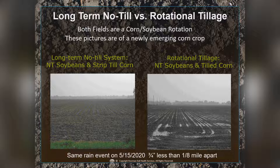This is long-term no-till versus rotational tillage on a Hoytville soil in northwest Ohio. At this particular site a couple years ago, we got three-quarters of an inch of rain, and these two fields were less than one-eighth mile apart. On the right-hand side, where we had no-till soybeans followed by tilled corn, we have standing water ponding on the soil. Just an eighth of a mile down the road, where we had a long-term no-till system with strip-till corn, there's no standing water — showing the impact of tillage and compaction on water storage in these soils.